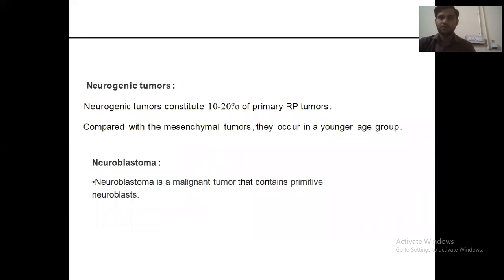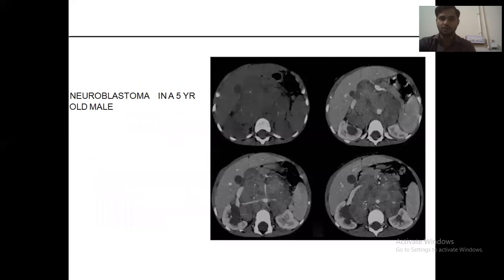Neurogenic tumors account for 10–20% of primary retroperitoneal tumors. Compared with mesenchymal tumors, they occur in a younger age group. Neuroblastoma is a malignant tumor that contains primitive neuroblasts. A case example shows neuroblastoma in a 5-year-old male.